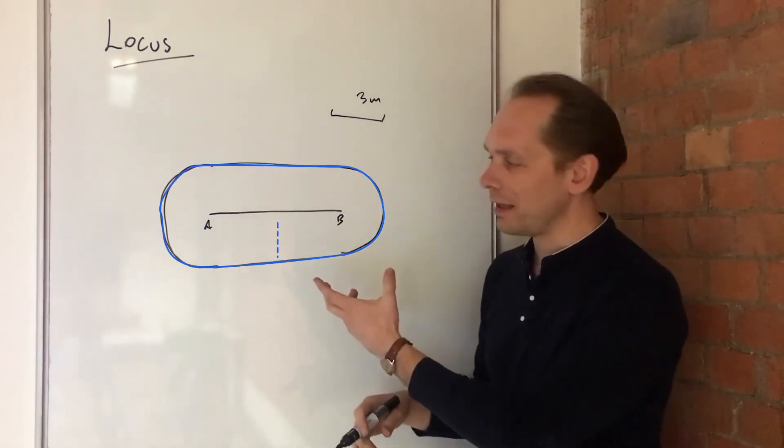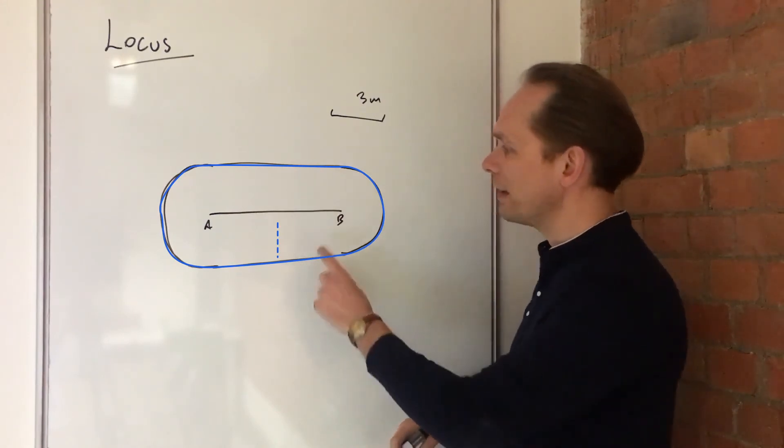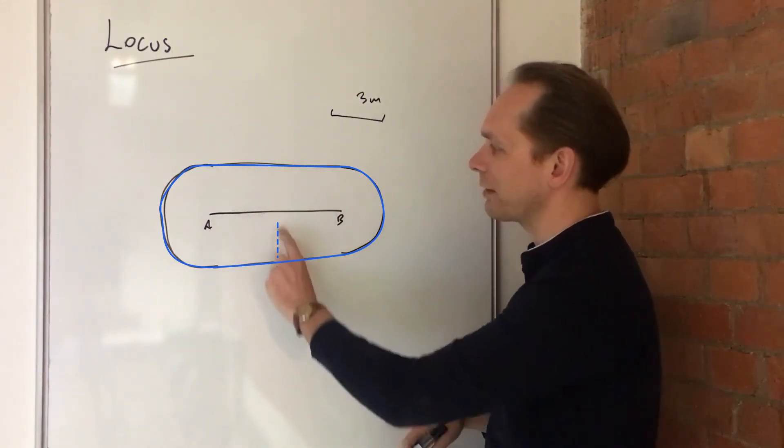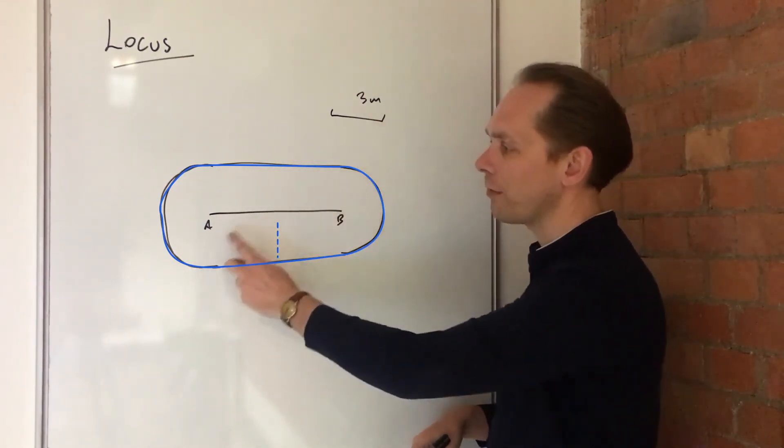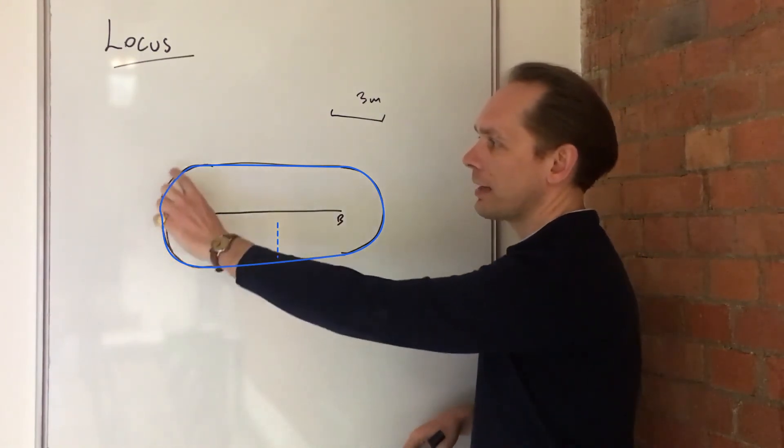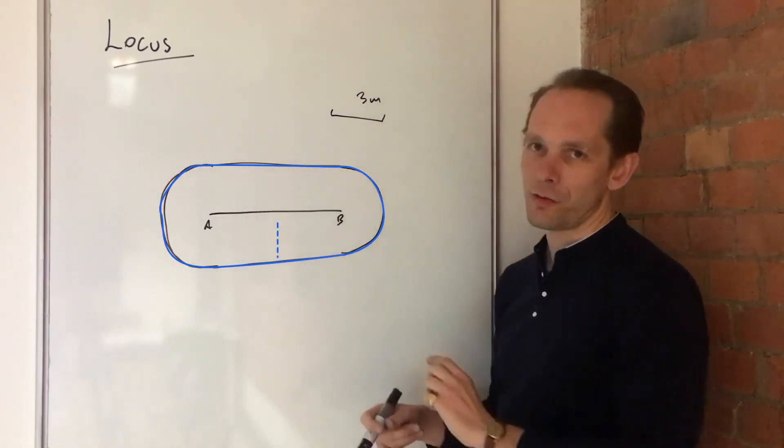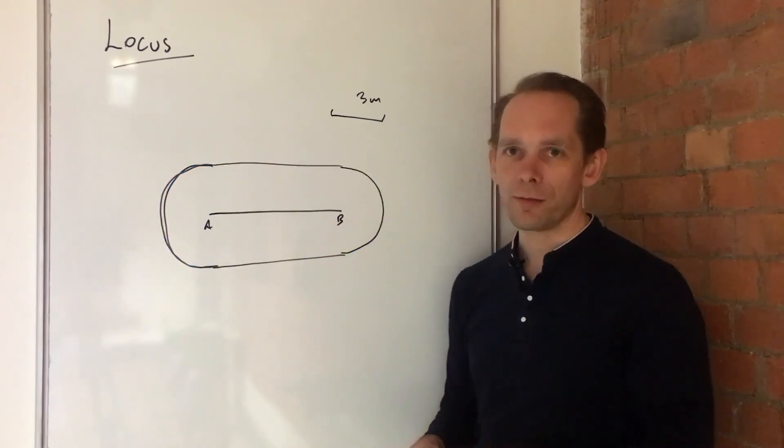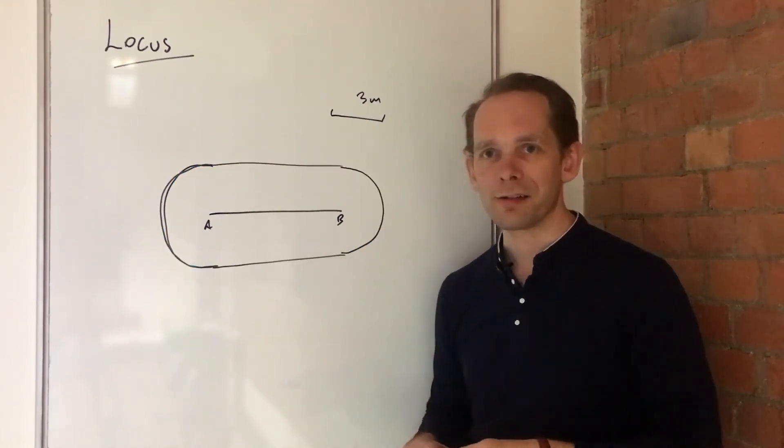notwithstanding my kind of slightly rubbish drawing, that every point on this shape is three meters by this scale from the line. So you get that stadium shape. And that's quite typical locus of distance from a point will look like that kind of sausage or stadium.